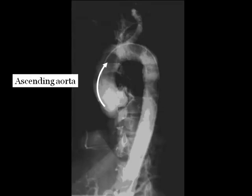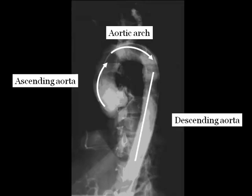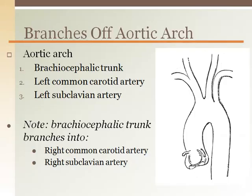The ascending aorta can be seen above the aortic valve. The aortic arch is visible with imaging dye going out to the branches, and the descending aorta completes the hairpin turn. The three branches off the aorta bring blood to the head and arms. The first branch is the brachiocephalic trunk — brachio meaning arm and cephalic meaning head. This branch is just a couple of inches long and connects the aorta to the right subclavian artery serving the arm and the right common carotid artery serving the head.